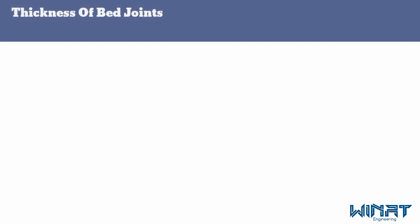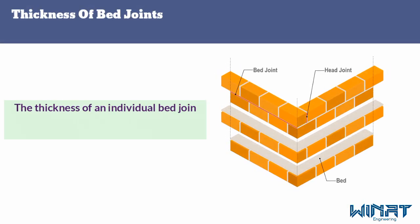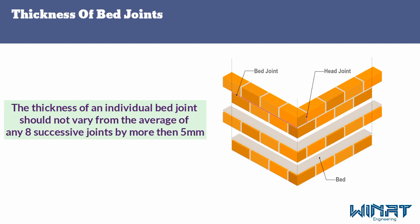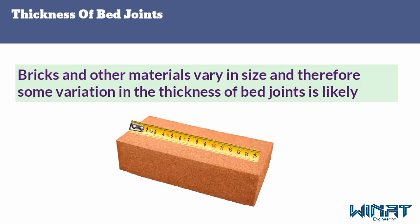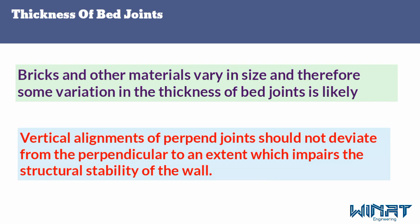The next tolerance is thickness of bed joints. The thickness of an individual bed joint should not vary from the average of any 8 successive joints by more than 5 millimeters. Since bricks and other materials vary in size, some variation in thickness is likely. Due to this, vertical alignment of perpend joints also should not deviate from the perpendicular to an extent which impairs the structural stability of the wall.